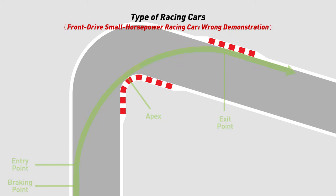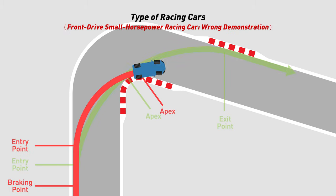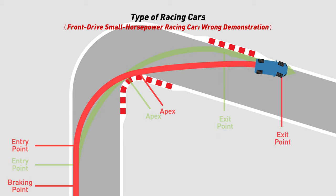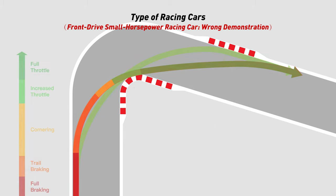If you pursue a later entry point and later apex, the car will need to slow down more in the corner. Such a line will waste more time to accelerate for a small horsepower front-drive car with weak acceleration performance, which is not conducive to lap times.